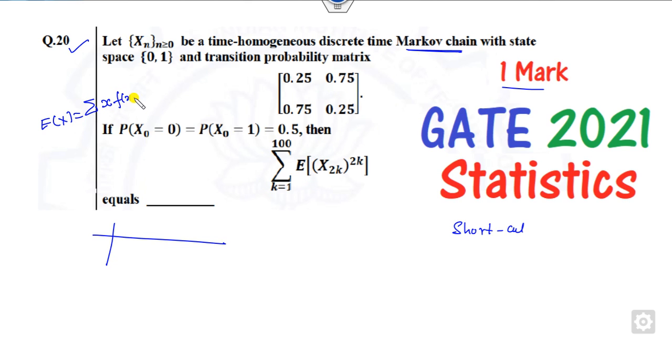So x into f of x or p of x. So what is that? This x is my 0 and 1. This is my x and now you have to find the probability of these two parameters. How can you find that? You have to find this stationary probability.